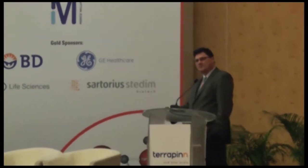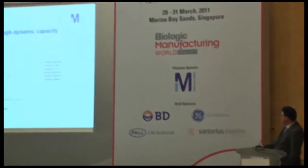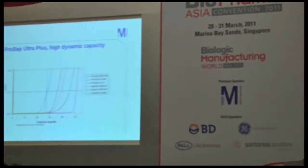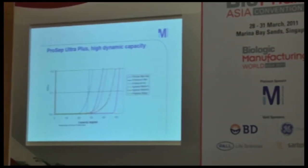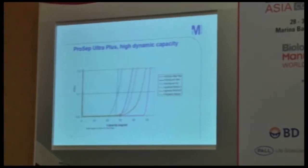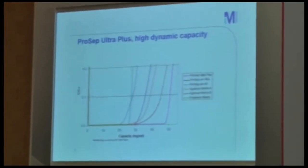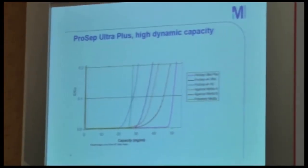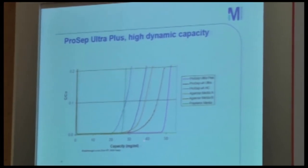We have here breakthrough curves of commercially available resins. Luckily, those manufactured by Merck Millipore exhibit very steep breakthrough curves and can be used to the theoretical capacity limit without significant breakthrough.